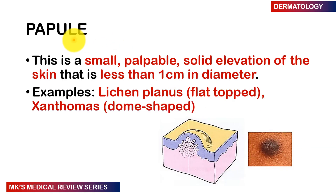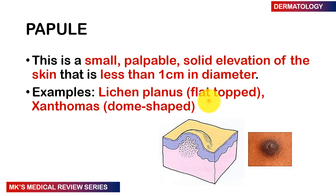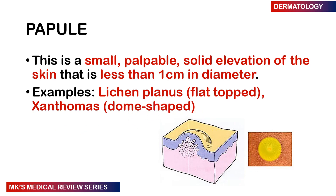Moving on to a papule — unlike macules and patches which are non-palpable, papules can be palpated. If you close your eyes and move your hand across this lesion, you will feel a bump. A papule is a small, palpable, solid elevation of skin less than one centimeter in diameter. If flat-topped, it's seen in lichen planus; you may also see dome-shaped papules in xanthomas. Here's an image showing what a papule looks like.